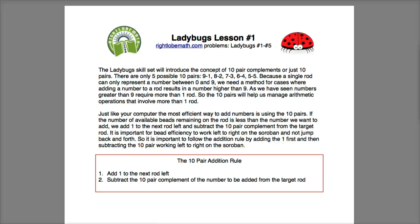In Ladybugs we're going to introduce the concept of the ten pair, and there are only five possible ten pairs. They are combinations of numbers that add to ten, such as nine and one, eight and two, seven and three, six and four, and five and five. So we just need to memorize these five pairs.